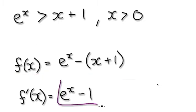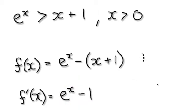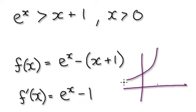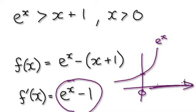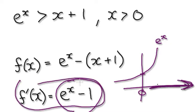Now when you differentiate it, it gives you f prime of x equals e^x minus 1. When you look at e to the power of x, the graph looks something like this — don't forget, at x equals zero this is 1. Realize that in the interval where x is bigger than zero, all the way up here, f prime will always be positive.